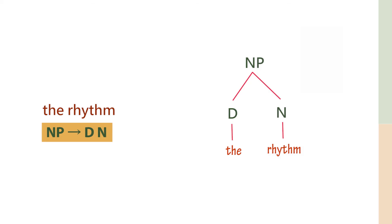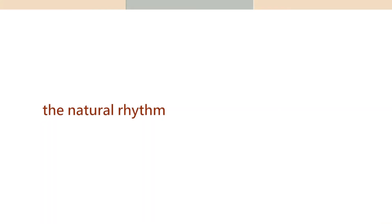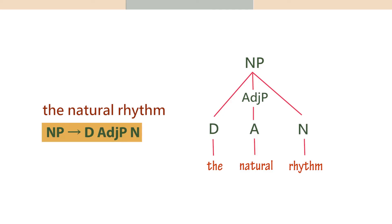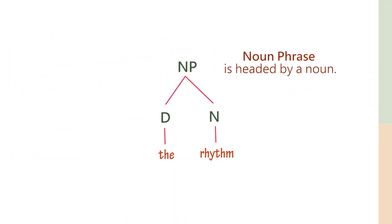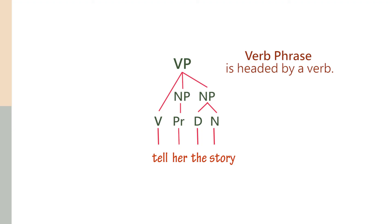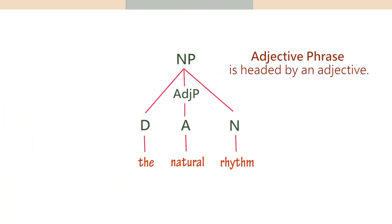If it's more complicated, it doesn't matter. You can still do the tree. For example, 'the natural rhythm.' If I give you the phrase 'the natural rhythm,' it's not a sentence, it's a phrase. It's a noun phrase that consists of a determiner and an adjective phrase and a noun. You have to write the rule for that. The adjective phrase consists of an adjective only. Every phrase is headed by something. A noun phrase is headed by a noun, a verb phrase is headed by a verb, an adjective phrase is headed by an adjective.